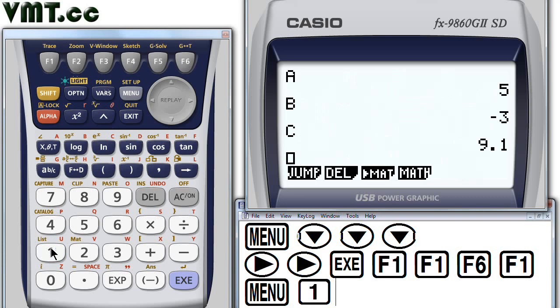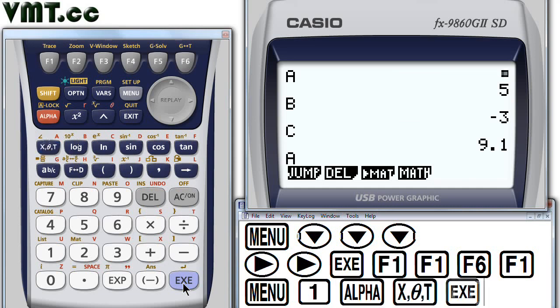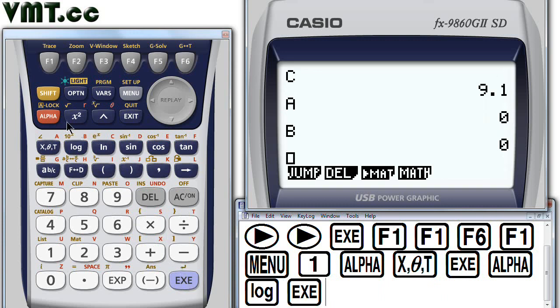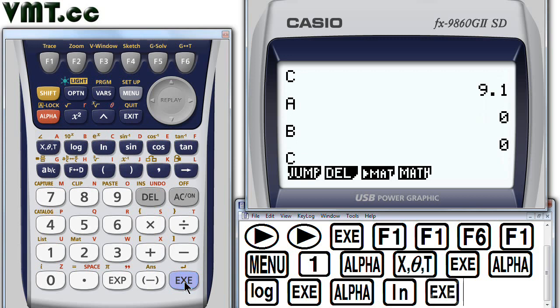If you wish, you can double check to see that the values have been deleted. Press alpha A, execute. Alpha B, execute. Alpha C, execute. Yes, as you can see, all the variable values are now 0.